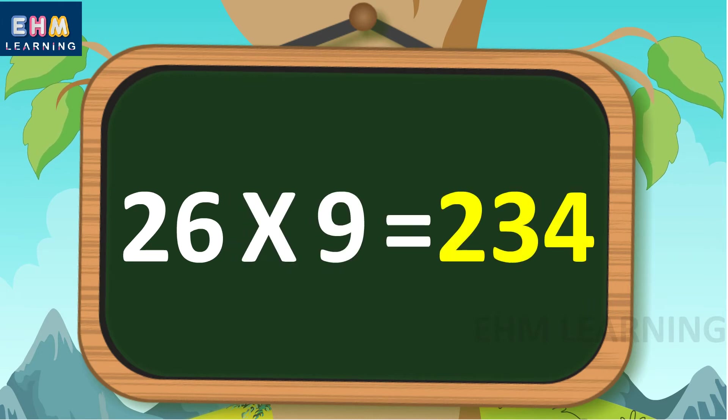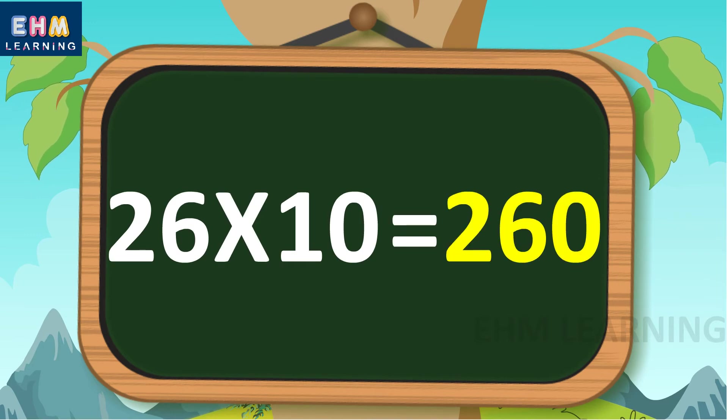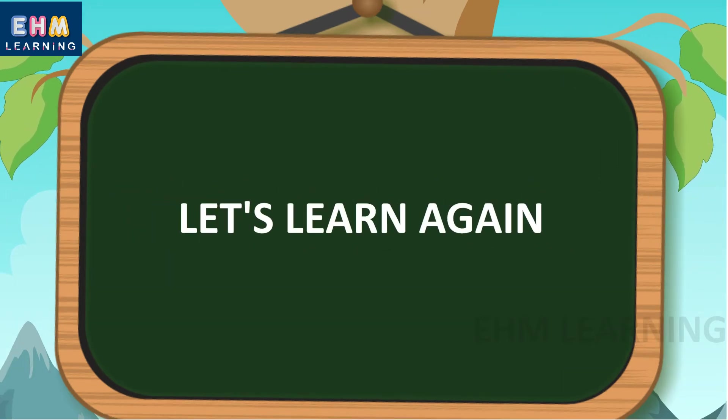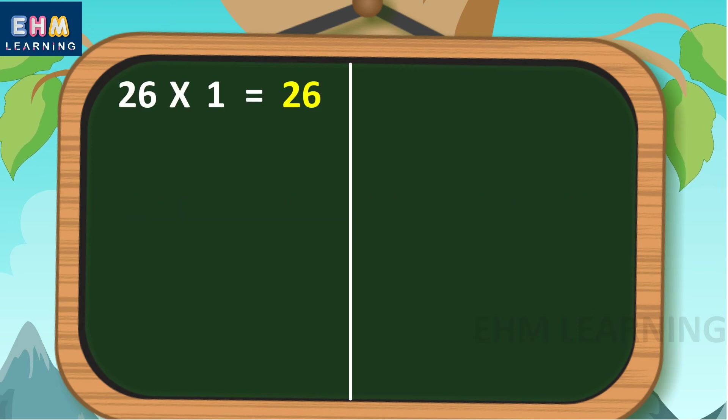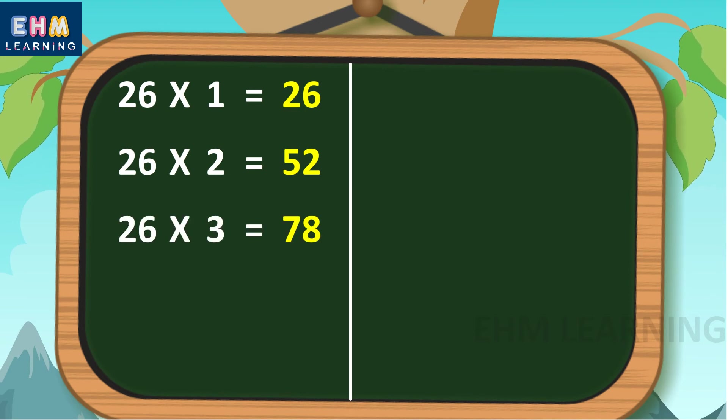26 nines are 234, 26 tens are 260. Let's learn again. 26 ones are 26, 26 twos are 52, 26 threes are 78.